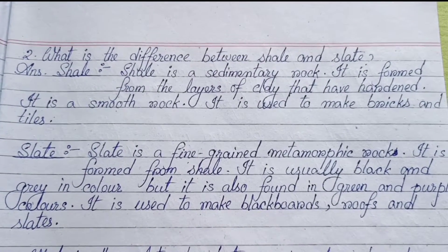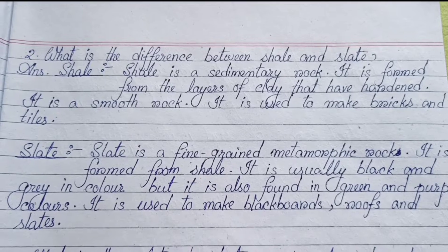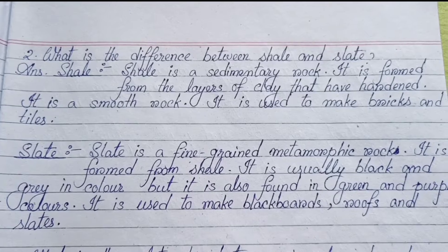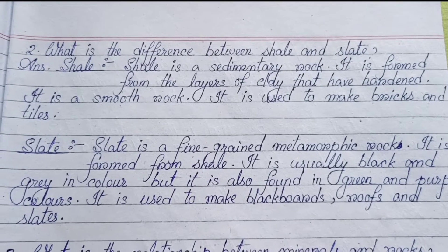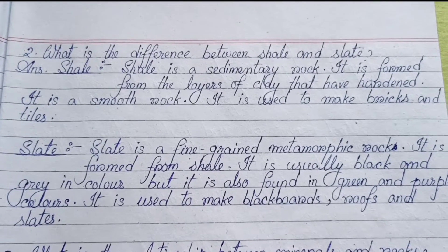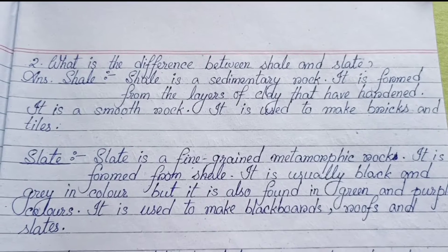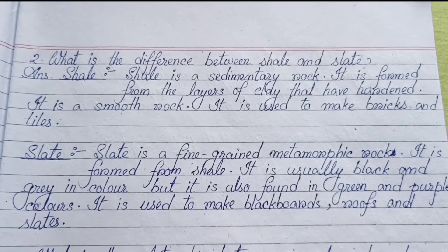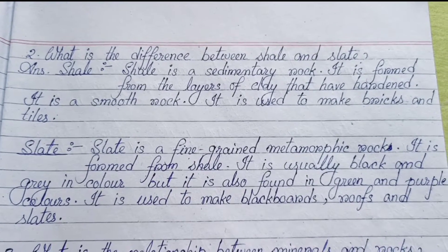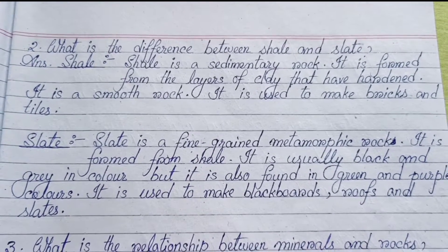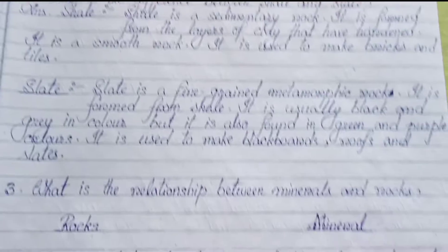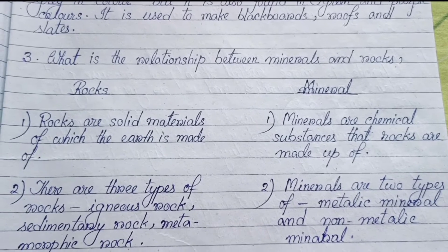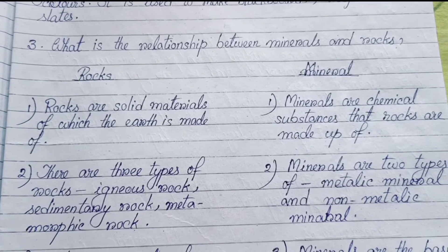Number two: What is the difference between shale and slate? Shale is a sedimentary rock. It is formed from layers of clay that have hardened. It is a smooth rock and is used to make bricks and tiles. Slate is a fine-grained metamorphic rock. It is formed from shale. It is usually black and gray in color but also found in green and purple. It is used to make blackboards, roofs, and slates.